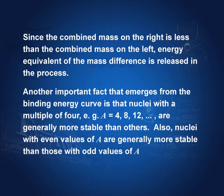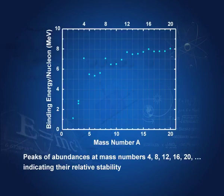Another important feature from the binding energy curve is that nuclei with mass numbers that are multiples of 4 — such as 4, 8, 12, 16, and 20 — are generally more stable than their neighbors. As seen in the graph, these mass numbers show peaks in binding energy per nucleon compared to adjacent mass numbers.